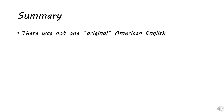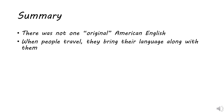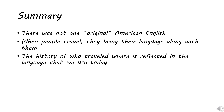Let's summarize the last couple of lessons. First, there was never one original American English — even when people first arrived speaking English, they were already speaking different varieties, so it's not surprising we have a variety of dialects today. Second, when people travel, they bring their language along with them, so the history of who traveled where is reflected in the language we use today. Lastly, remember the distinction between a superstratum language and a substratum language in terms of how the two types influence each other. That's our lesson on the development of regional dialects in the United States — I hope you enjoyed it.